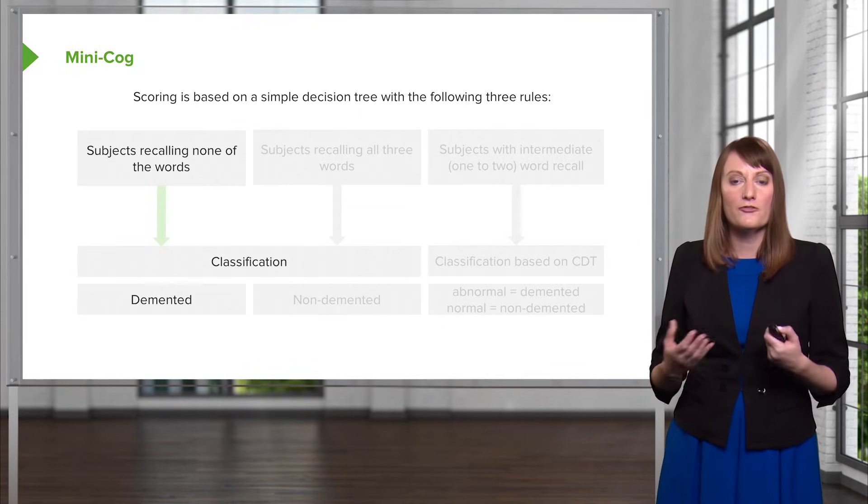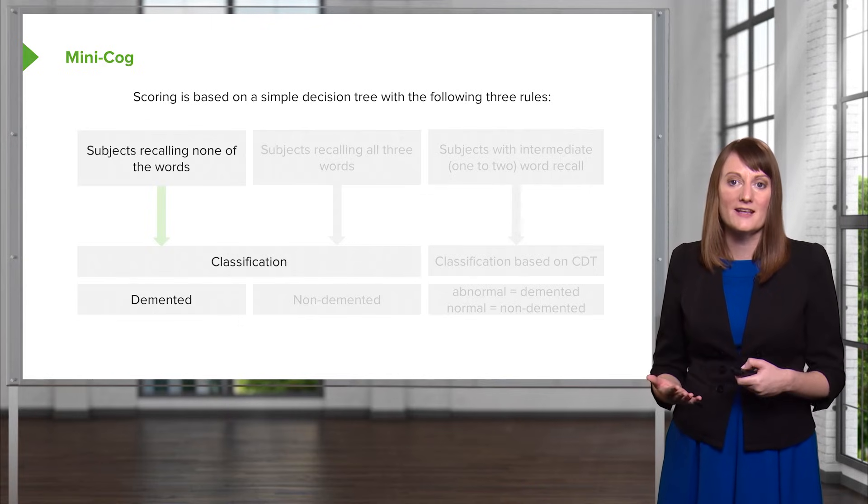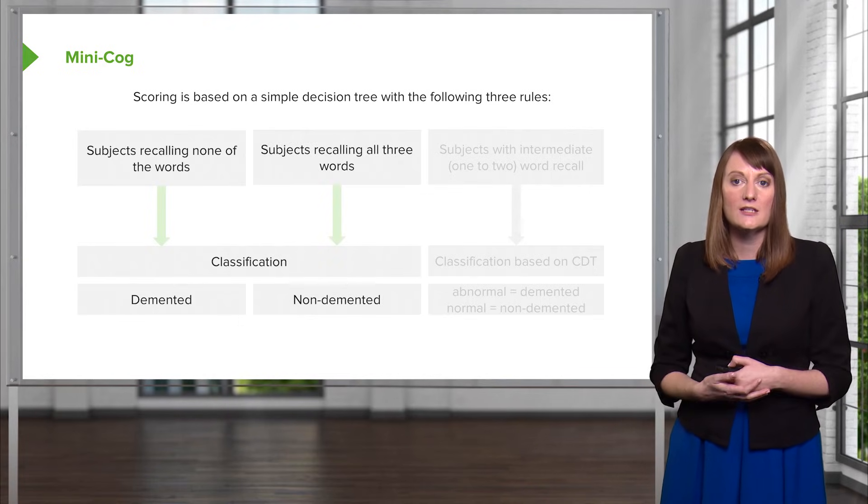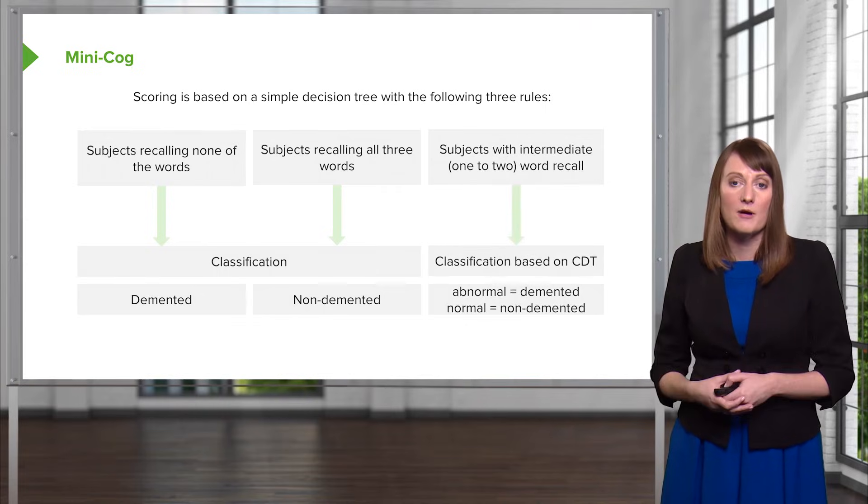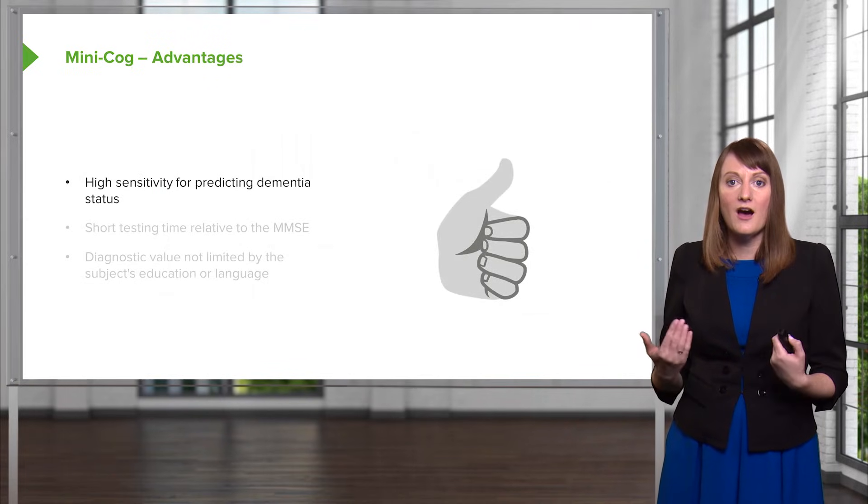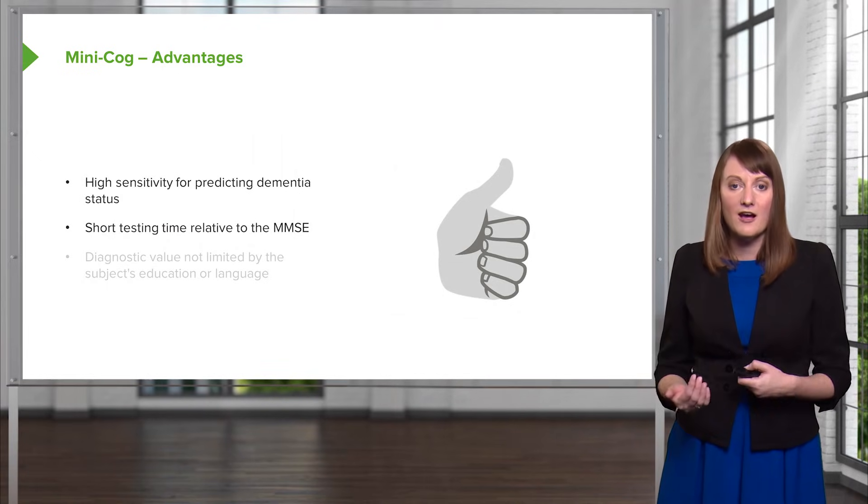With recall of three words, you can really quickly just see how somebody's memory is based off of whether they can recall all three words easily or if it's a struggle to even come up with one. The advantages of the MINI COG are the high sensitivity for predicting dementia, the short testing time.